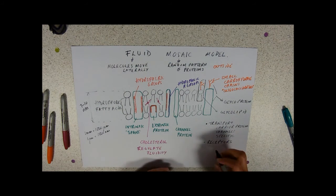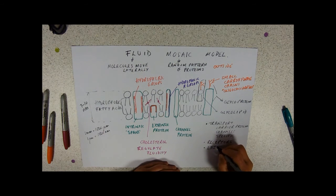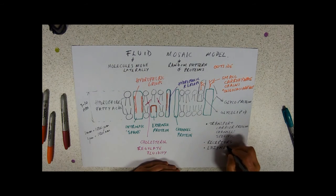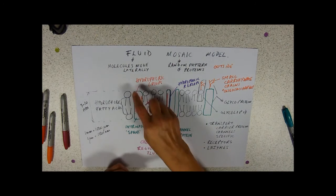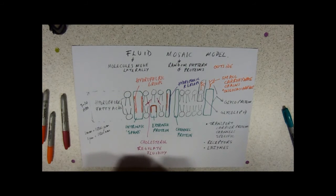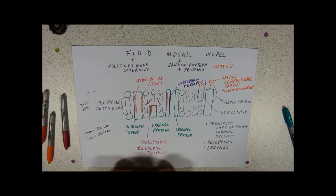They can also be enzymes. So, the example that you've done already is in the mitochondrion, we've got intrinsic proteins. The ATP synthetase forms these big proteins forming the stored particles to make ATP. So, that's one place where you've heard of them being enzymes.